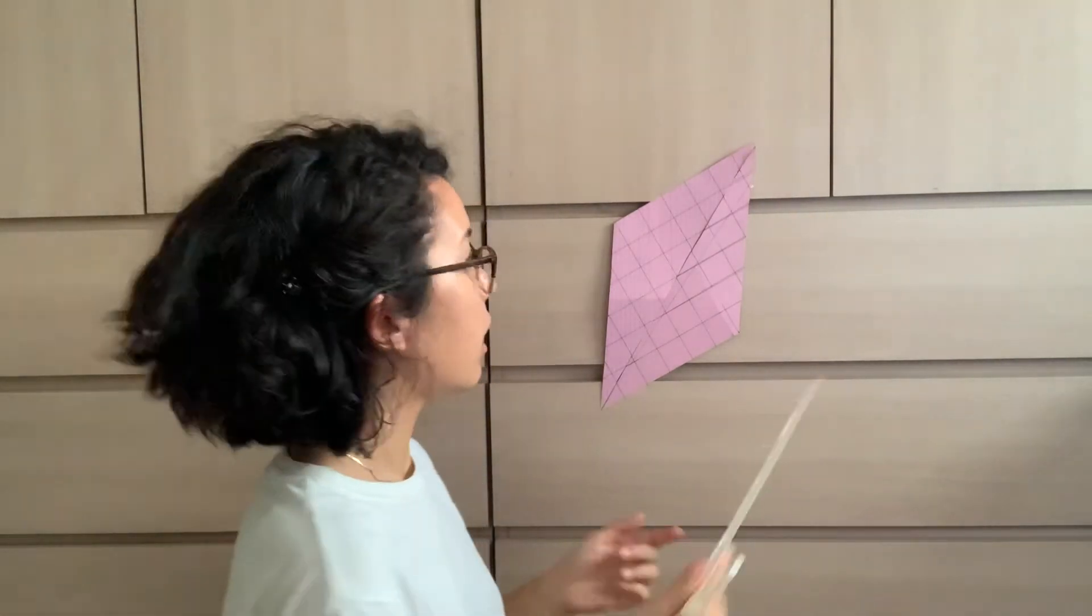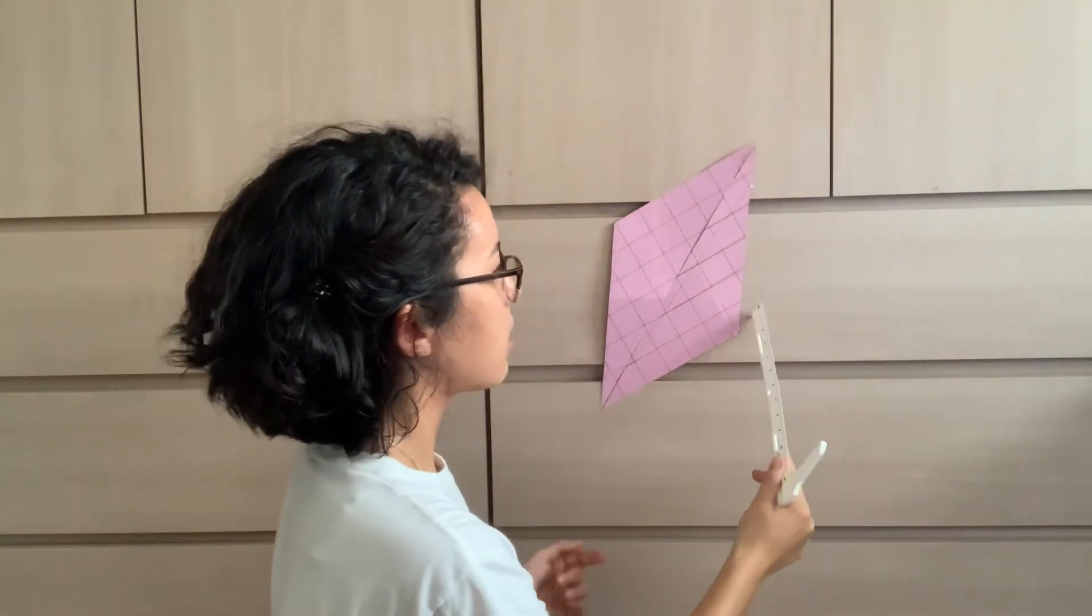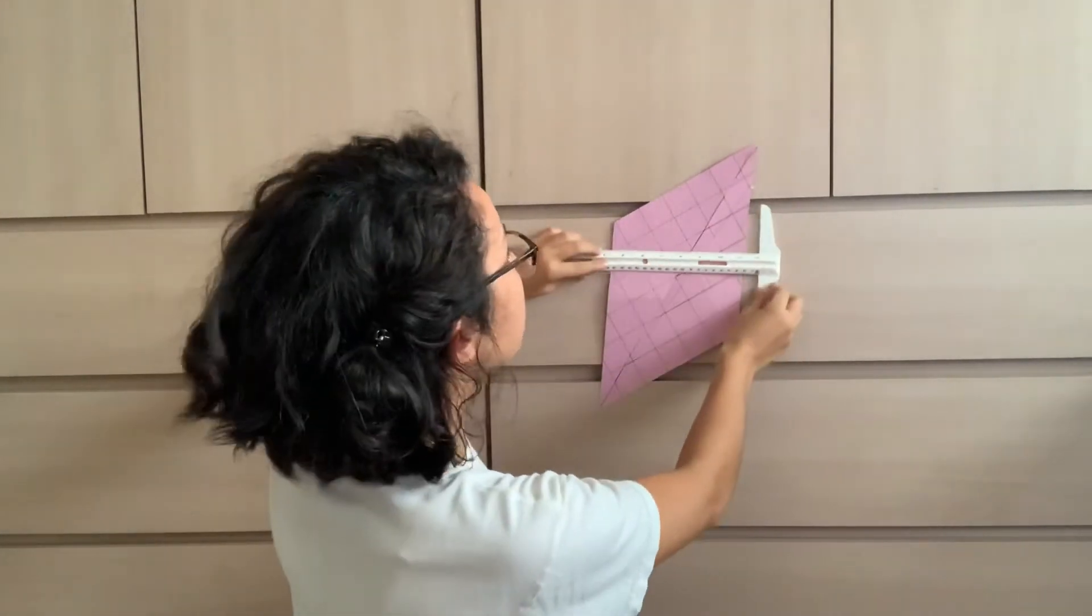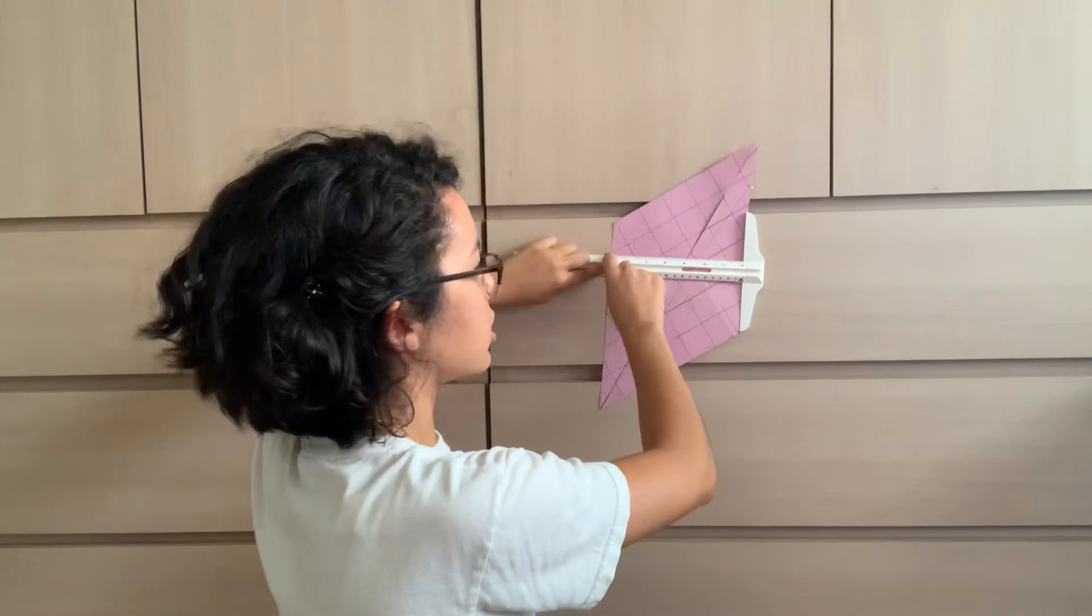Remember, height is perpendicular to base. So what you're gonna do: this will be the base, and your height is going to be measured perpendicular. That's seven inches.